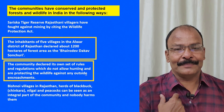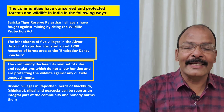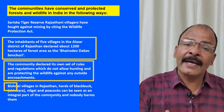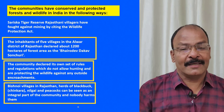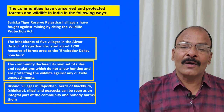Inhabitants of five villages in Alwar district, Rajasthan, declared 1,200 hectares as a sacred area called 'Bhairo Devi Dakav Sanctuary.' The community created its own rules and regulations to protect wildlife against outside encroachment. Similarly, the Bishnoi community in Rajasthan treats animals like family members. In Bishnoi villages, herds of black buck, nilgai, and peacocks are an integral part of the community and nobody harms them.